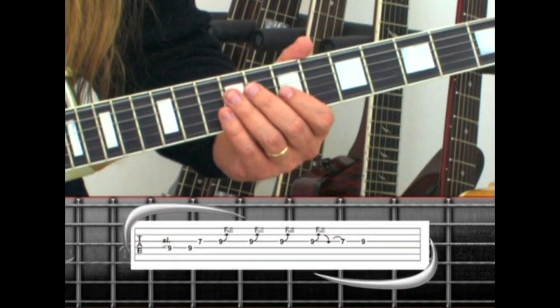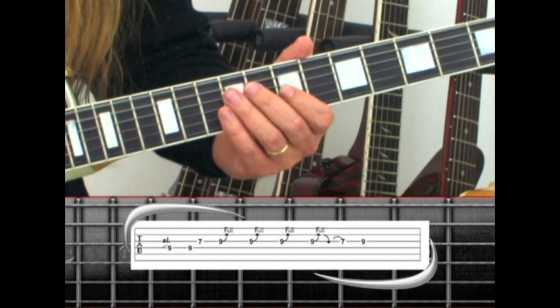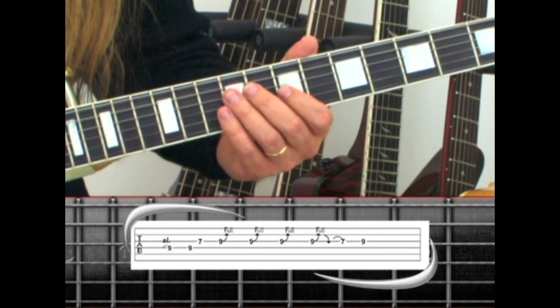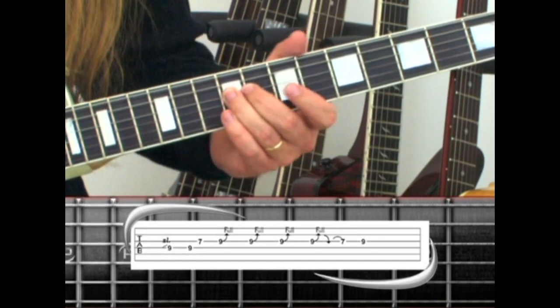Our outro solo starts with phrase 20, sliding up the fourth string to the ninth fret with the ring finger. Pick the ninth fret again.